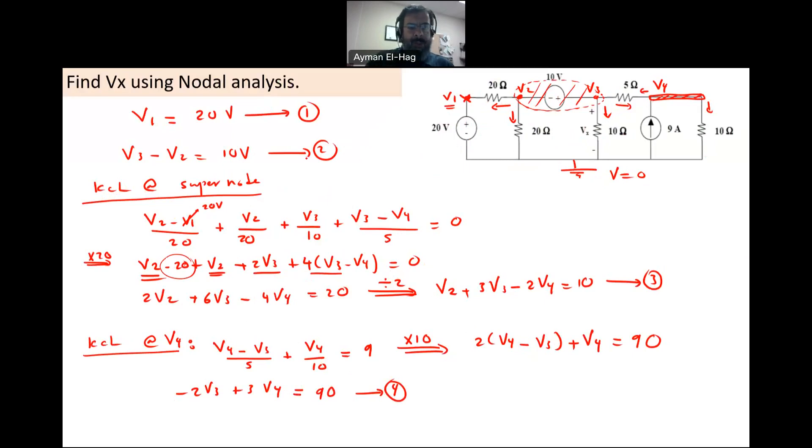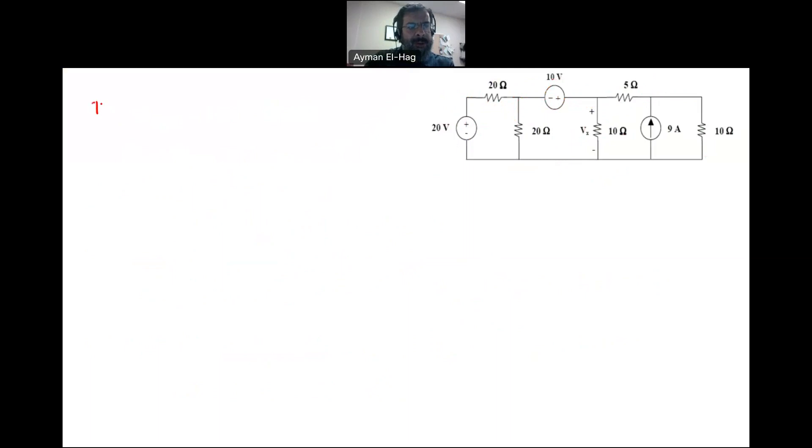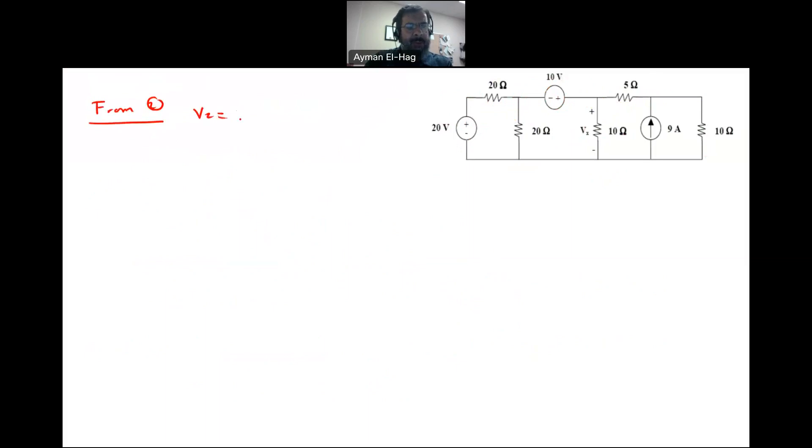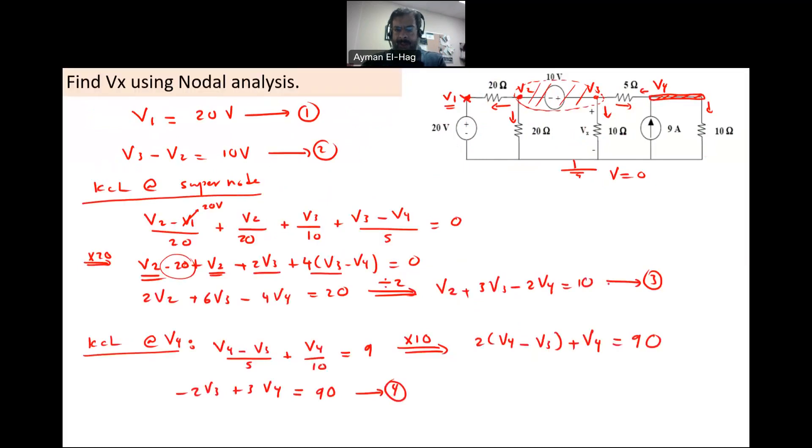So from this equation, from equation number 2, I can find V2 in terms of V3, come to equation 3, substitute V2 here, and then you will have two equations, 3 and 4, in terms of V3 and V4. Again, eliminate one of the variables to find the last one. So basically from equation 2, which is V3 minus V2 equal to 10, we can say that your V2 is equal to V3 minus 10. This is basically the same equation. We just changed it a little bit. Now I will substitute this equation 2 in equation number 3.